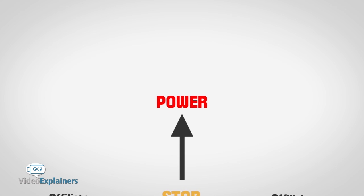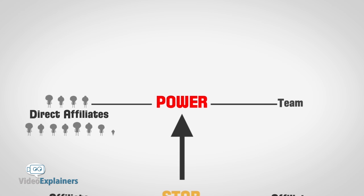Power is the next rank when you have a minimum of four direct affiliates and a team total of 12 affiliates. If you do this in your first 15 days, you will earn an extra $200 bonus. You will also begin to earn the 20% override.